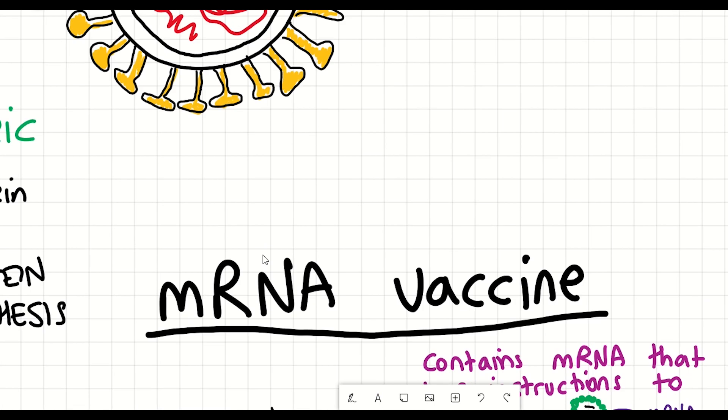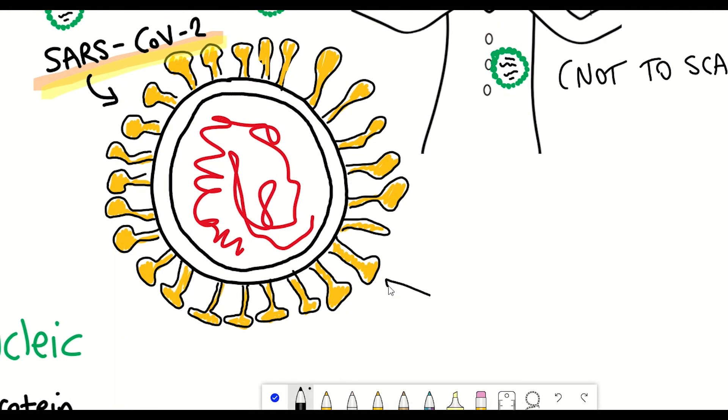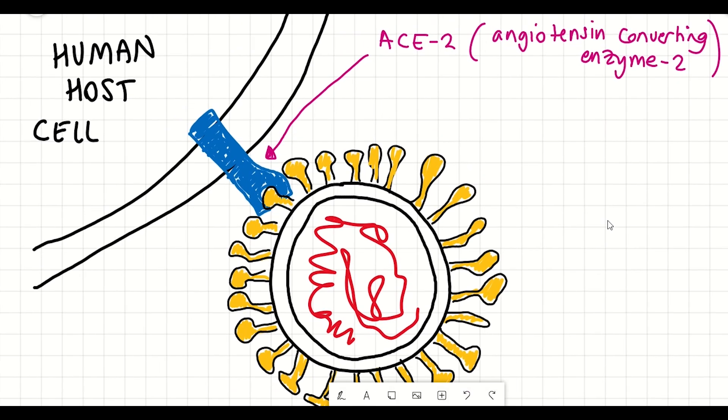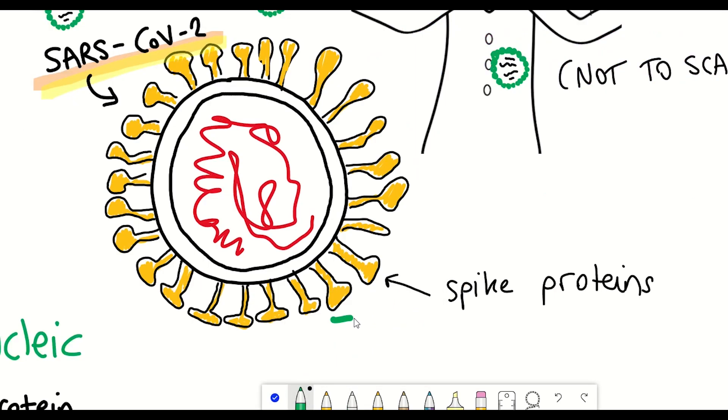And so if we look here, this is a drawing I've done of SARS-CoV-2 and you can see on its surface it has these so-called spike proteins that the virus uses to enter into our cells. And it's been shown in previous cases of coronavirus that only antibodies directed against the spike protein can neutralize the virus and prevent infection.